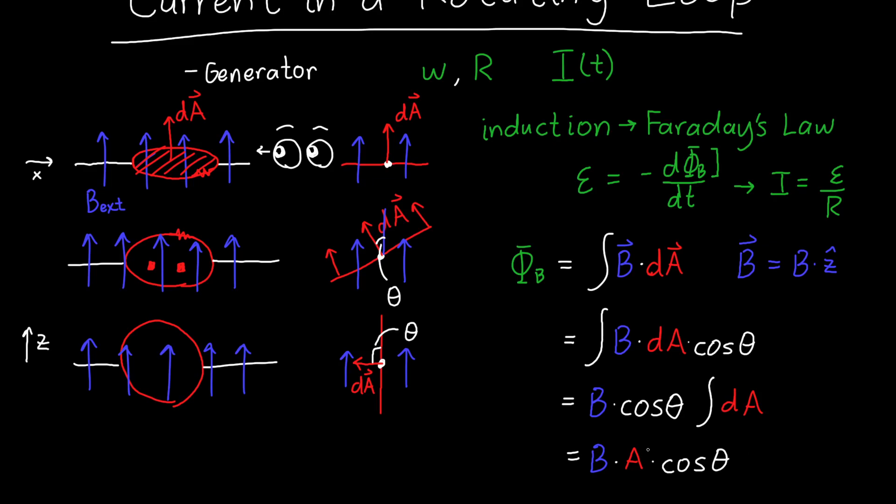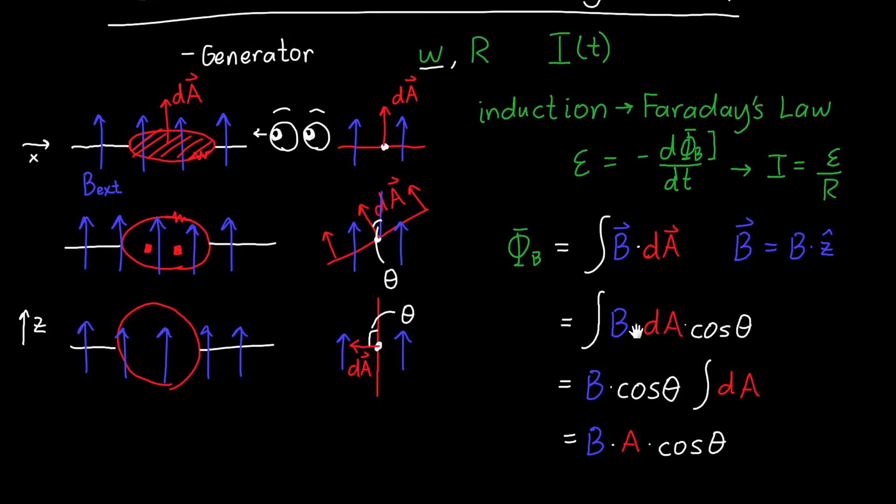So this whole thing is B times A times cosine of theta. Now this is great. We've made some progress. But now we need to take the time derivative of this. And I don't see any time dependence here. But remember at the beginning, we said that this loop has an angular speed omega. And so this is where our time dependence comes from.